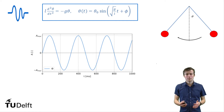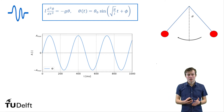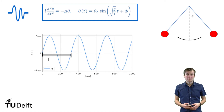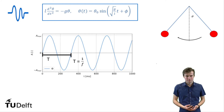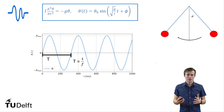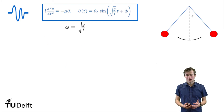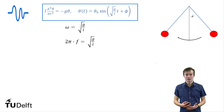If we want to know what is the period it takes to go back and forward, we can look how long it takes for the sine wave to go up and down. This is indicated by the black line and is named T, and this is equal to one over the frequency. If we look at the equation for theta, we can see that the angular frequency is the square root of g over l.